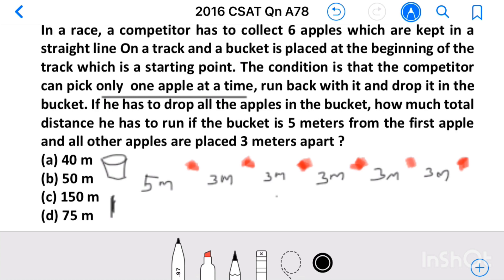To take first apple, he has to run 5 meters forward and 5 meters backward. That means total distance is 10 meters. Then to collect second apple, he has to run additional 3 meters forward along with this 5, then 3 meters backward. That means 10 plus 3 plus 3, that is 16.